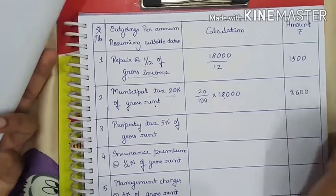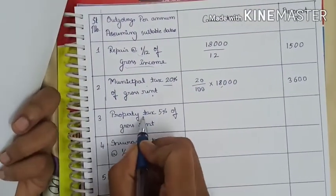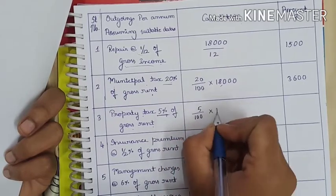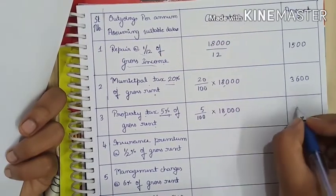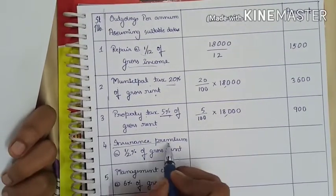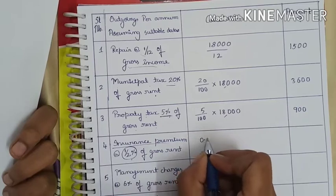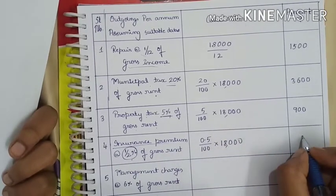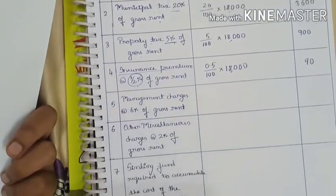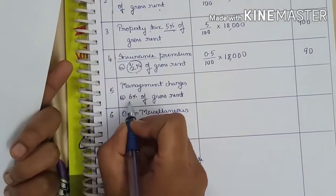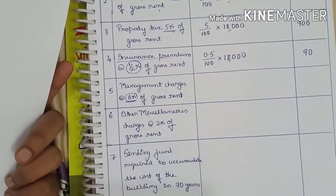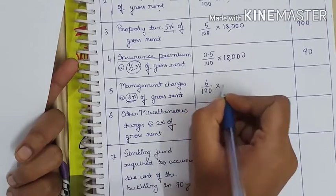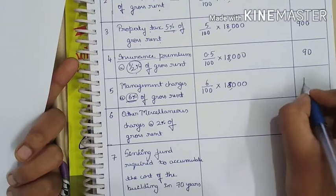The third item is property tax, assumed at 5% of gross rent. 5 divided by 100 into 18,000 gives 900. Then insurance premium at 0.5%, that is 0.5 divided by 100 into 18,000, which gives 90. The fifth item is management charges at the rate of 6% of gross rent: 6 divided by 100 into 18,000 equals 1,080.